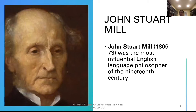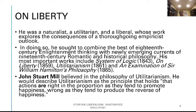John Stuart Mill, 1806 to 1873, was the most influential English-language philosopher of the 19th century. He was a utilitarian and a liberal whose work explores the consequences of a thorough-going empiricist outlook. In doing so, he sought to combine the best of 18th century Enlightenment thinking with newly emerging currents of 19th century Romantic and historical philosophy.